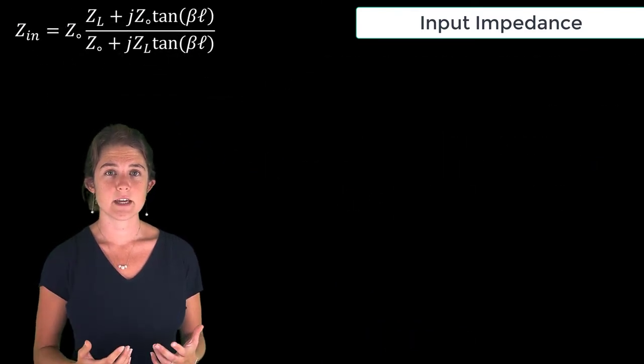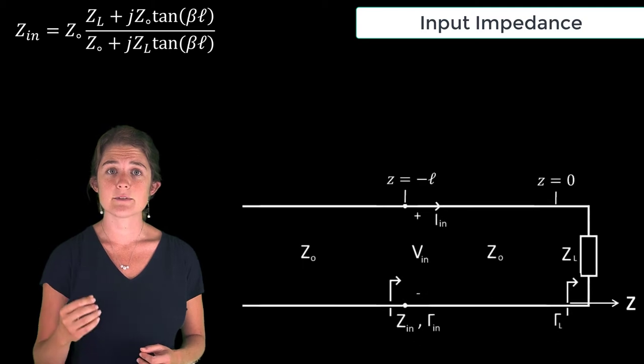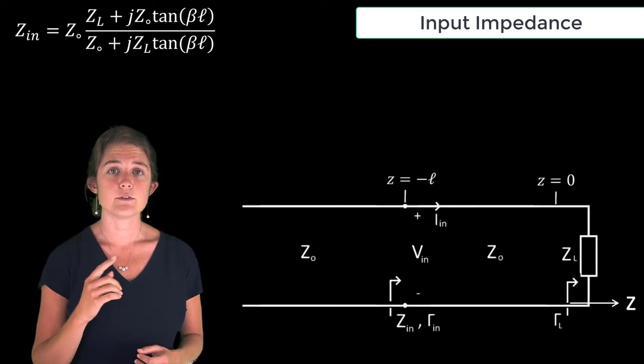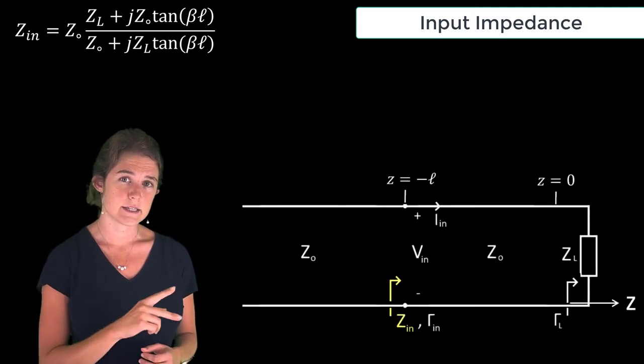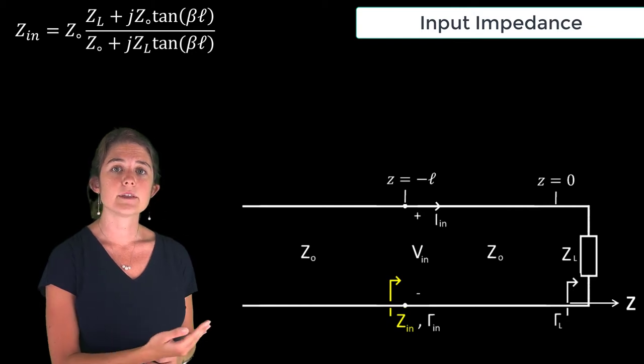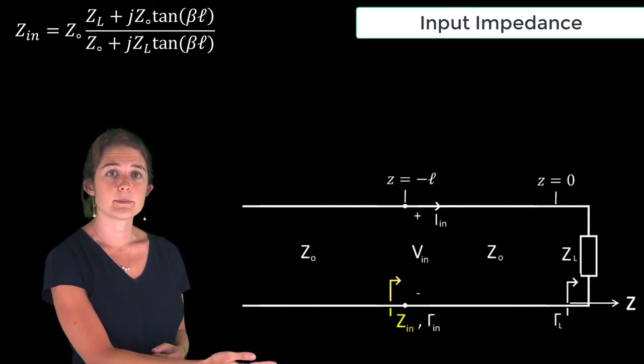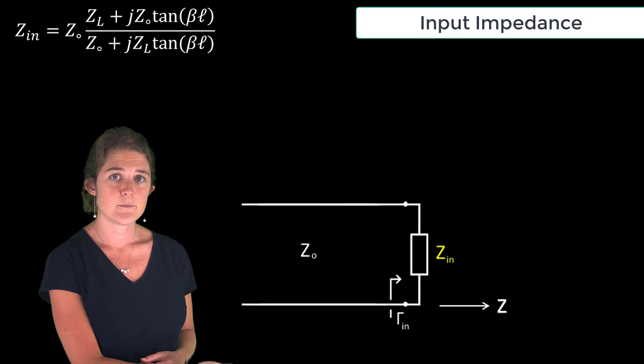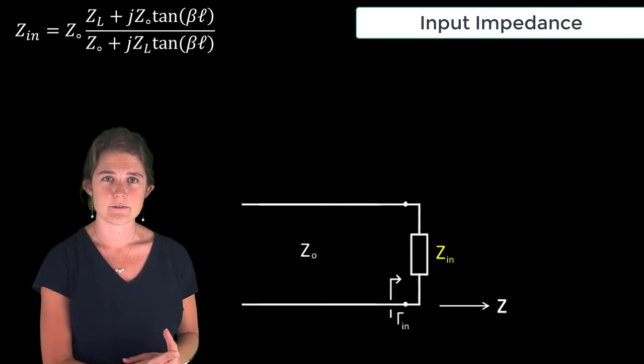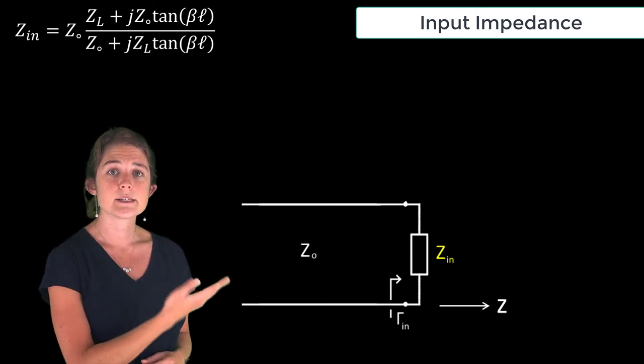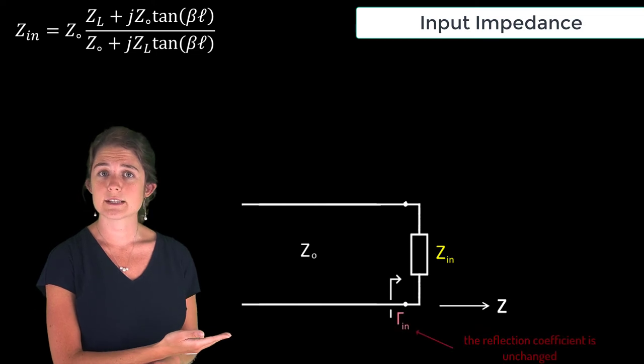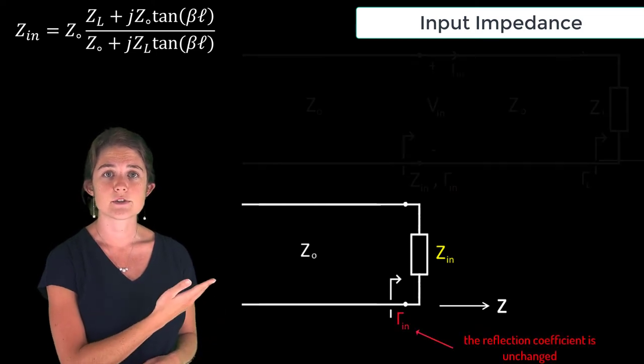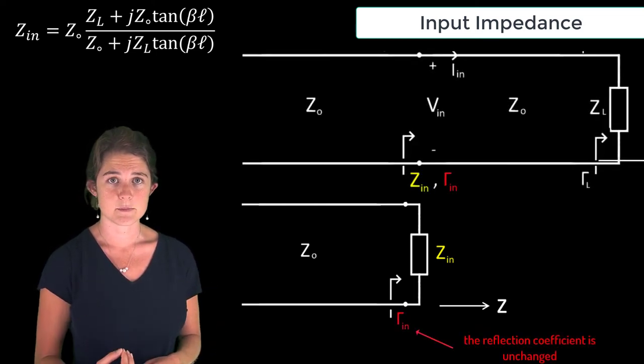The significance of the input impedance is that if you have a circuit like this and you know the input impedance looking into this port, then everything to the right of this port can be replaced by lumped impedance without affecting the left hand side of the circuit. So this lumped impedance will result in the same reflection as the original circuit where the load was at the end of the transmission line.